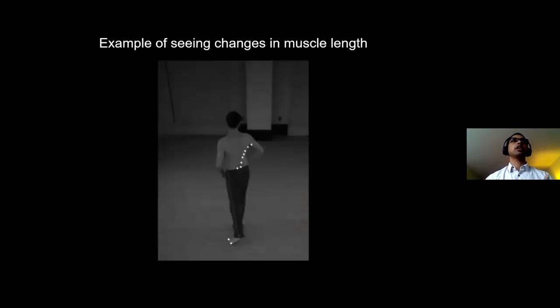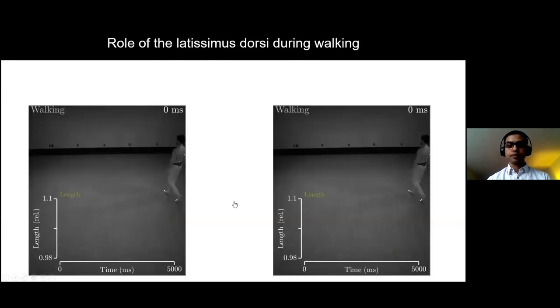What does seeing changes in muscle length look like? Here's a move called the spiral. Hopefully you can see that the length of the muscle is different between this frame and that frame.